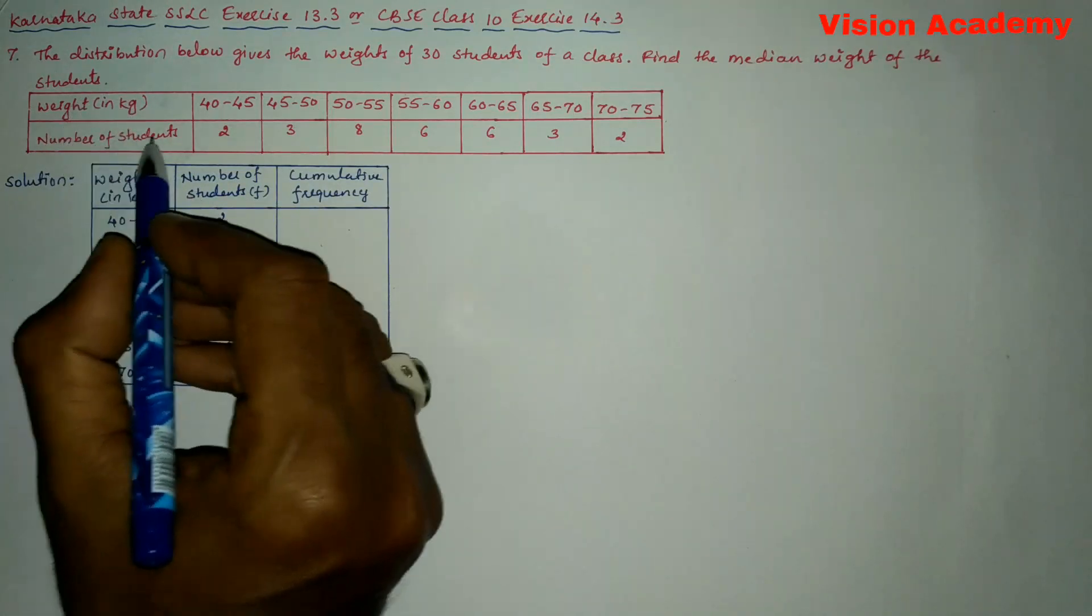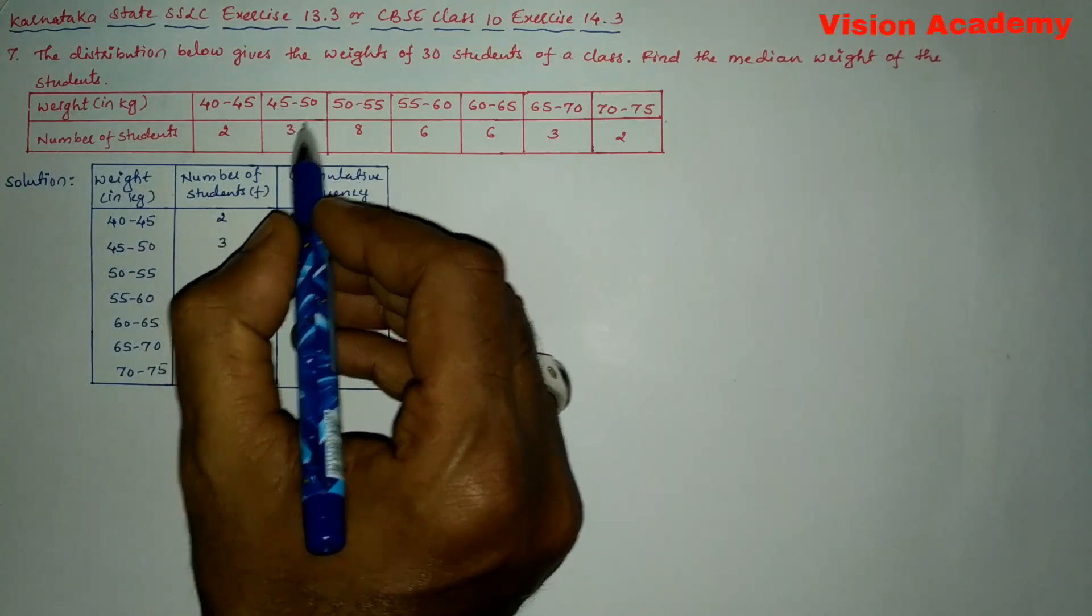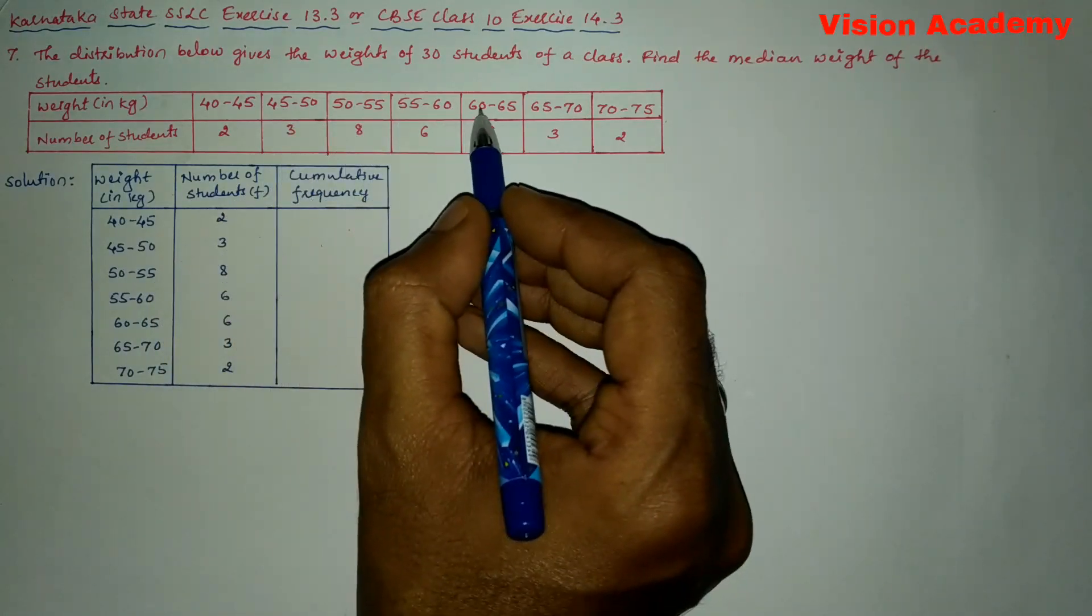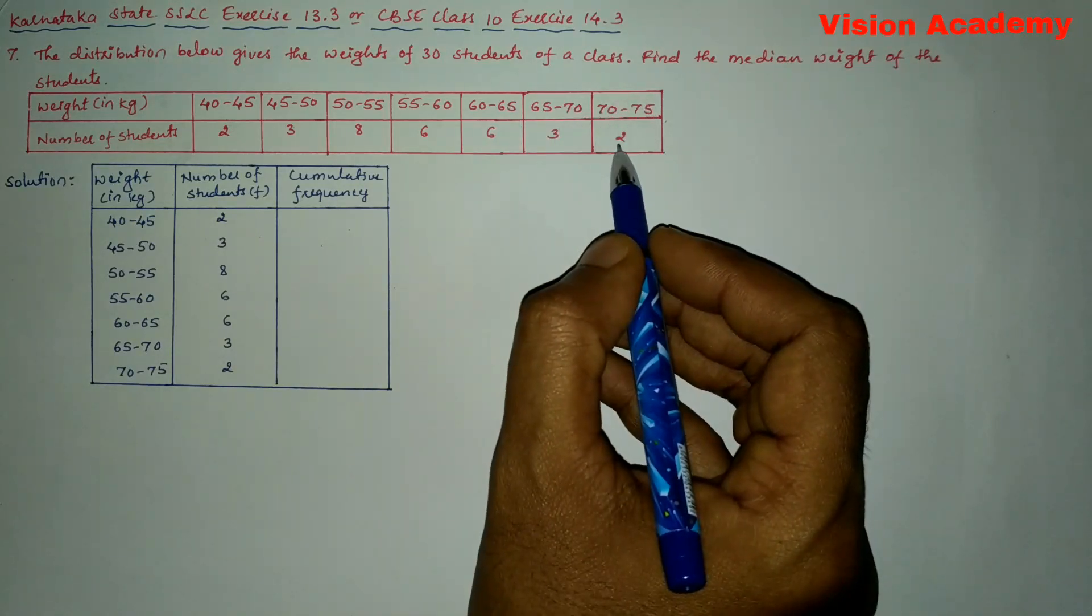Weight in kg, number of students: 40 to 45 is 2, 45 to 50 is 3, 50 to 55 is 8, 55 to 60 is 6, 60 to 65 is 6, 65 to 70 is 3, 70 to 75 is 2.